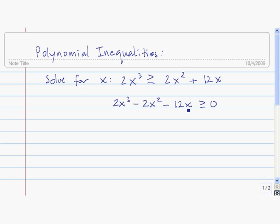Let's factor it in order to find the zeros. We can take a 2x out of each term. So here we're left with x² - x - 6. And next we can factor this. This factors as (x - 3)(x + 2).